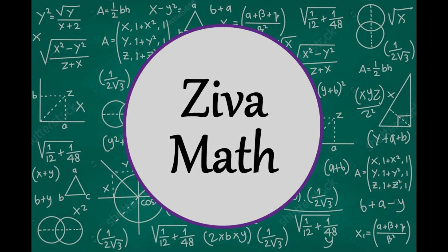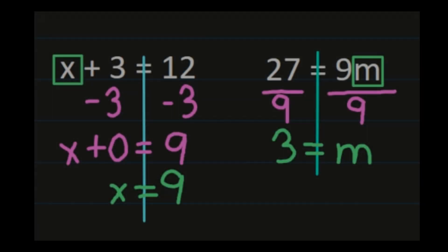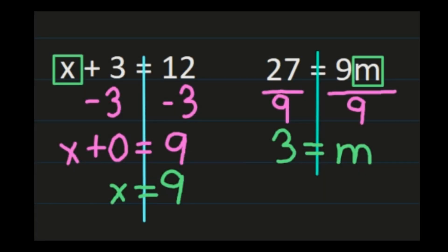Welcome to another Ziva Math video. In this video, we are going to practice one-step equations with integer operations. All of your steps to solve an equation by isolating the variable, using the inverse operation, and keeping both sides of the equation balanced will remain the same. You can find links to our videos on solving equations in the description below.